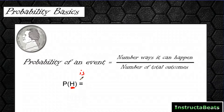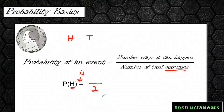The probability of the coin landing on heads — we want to write this as a ratio. The denominator is the number of total outcomes. When you flip a coin, it's either going to land on heads or tails, so there are two outcomes — the denominator is two. The numerator is the number of ways it can happen. There's only one way it can land on heads, so our numerator is one. The probability of the coin landing on heads is one-half.